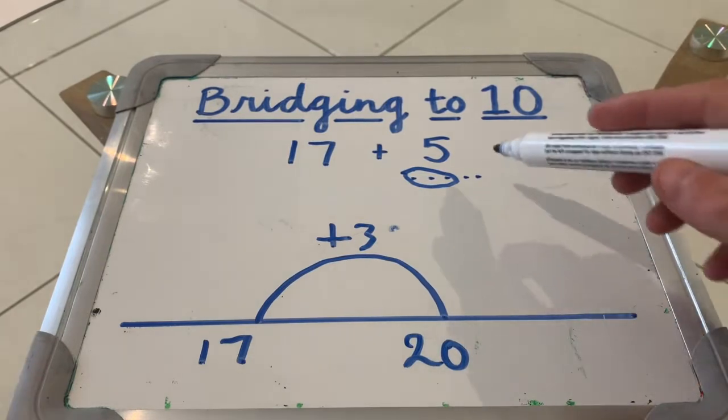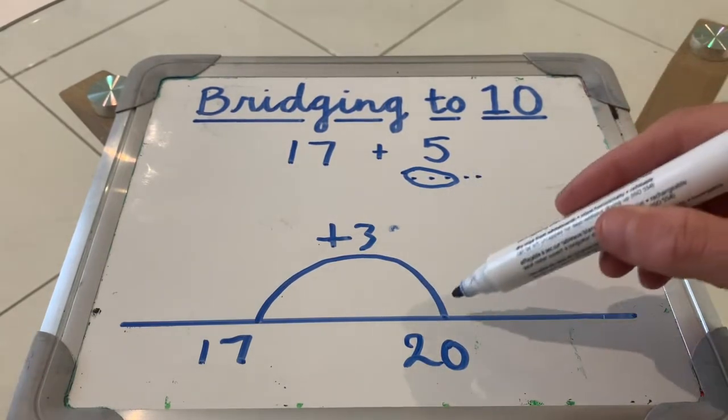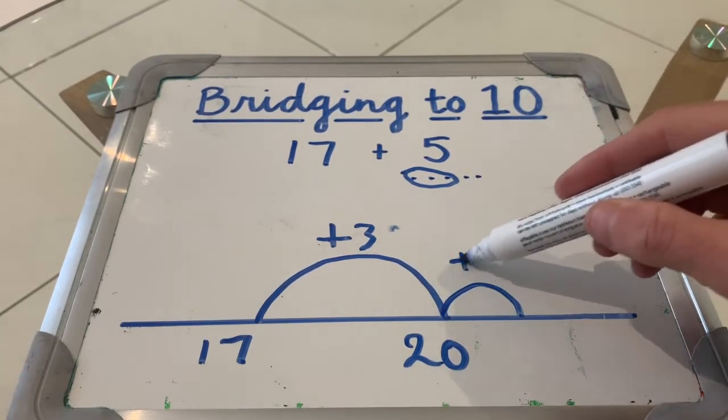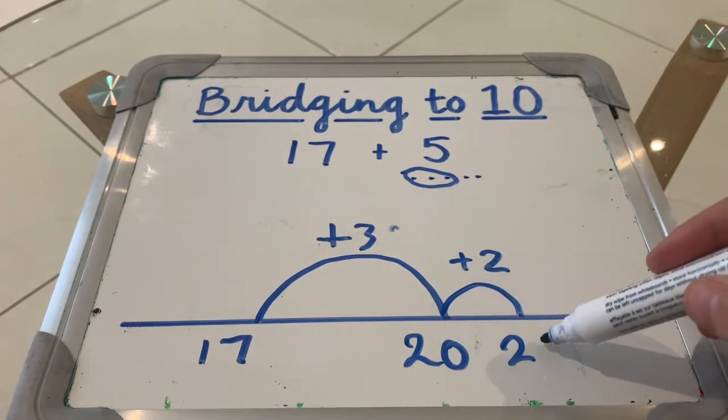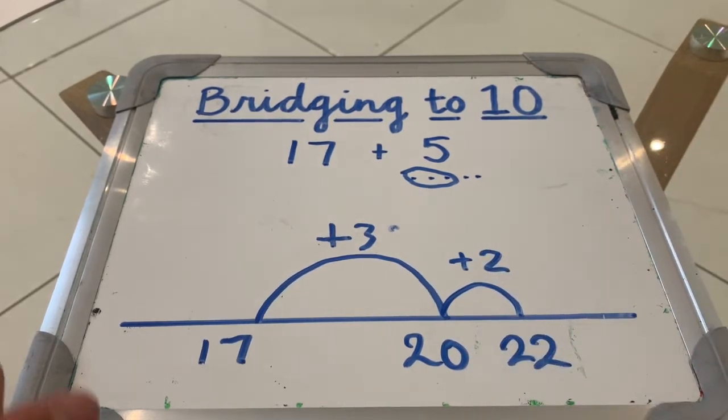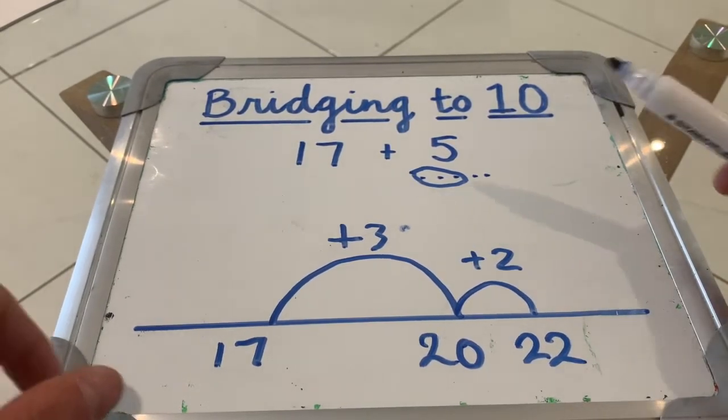And then, very simply, I see I have 2 left over and I add those 2 to make 22. And this is much faster than counting on by 1s or anything like that. And you find yourself getting quicker and quicker.